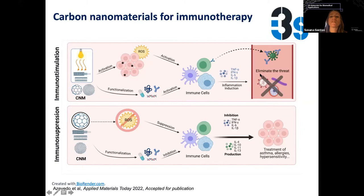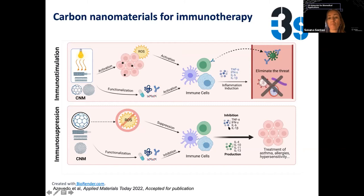On the immunosuppression side, some of these materials can be scavengers for reactive oxygen species, reducing their levels and reducing the activation of immune cells. They can also be combined with drugs that inhibit these cells, leading to a shift from inflammatory to anti-inflammatory cytokines, being used for treatment of asthma, allergies, or disorders where the immune response is overactivated.